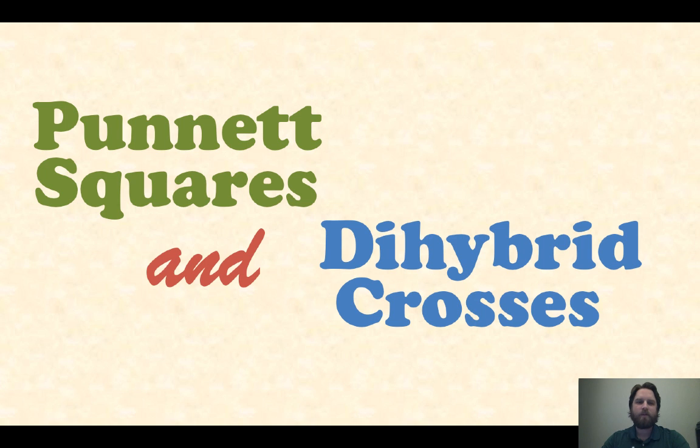Hey, it's Mr. Veve and this video is on Punnett squares and dihybrid crosses. No key concepts, so let's get right into it with some examples. First of all, a Punnett square is a tool that we use in genetics that helps us determine, based on the parent's genotypes, what the probability is that an offspring will have a certain phenotype.